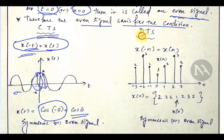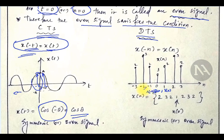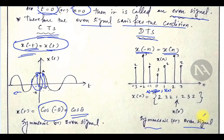Similarly, for a discrete time system, this is x of 0. So x of n on the positive side mirrors x of minus n. Therefore x of minus n is equal to x of n. For example, x of minus 2 equals x of 2, and x of minus 3 equals x of 3. So this signal exhibits symmetry — it is a symmetric or even signal.